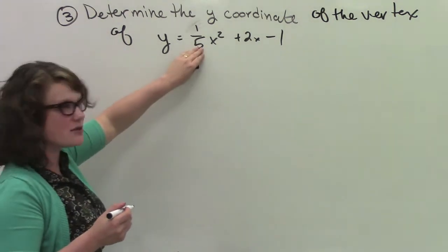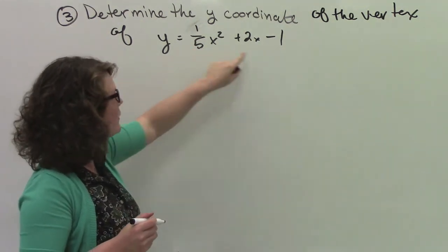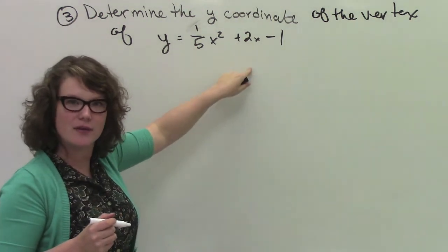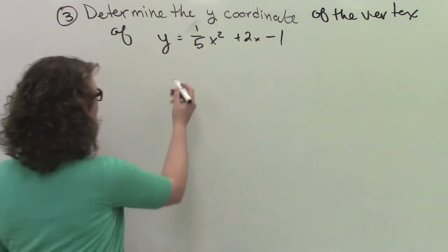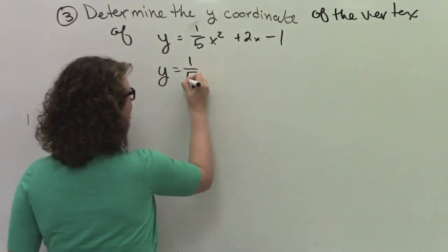Now, what makes this a doozer is that factoring out of the 1 fifth. So what we want to do is we want to factor out a 1 fifth from both of them, both of the first two, and leave the second. So y equals 1 fifth.